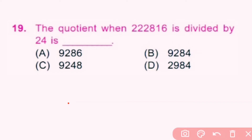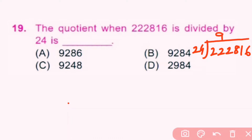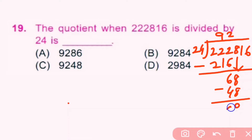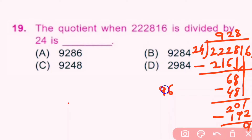Question number 19: We divide 22860 by 24. 24 × 9 = 216; 222 − 216 = 6, bring down 8 → 68; 24 × 2 = 48; remainder 20, bring down 1 → 201; 24 × 8 = 192; 201 − 192 = 9, bring down 6 → 96; 24 × 4 = 96. So the quotient is 9284 and B is correct.